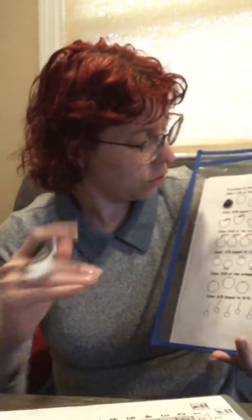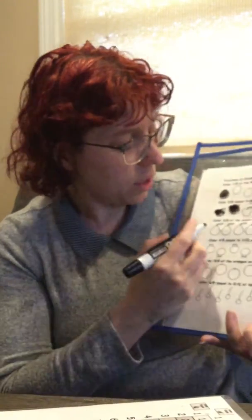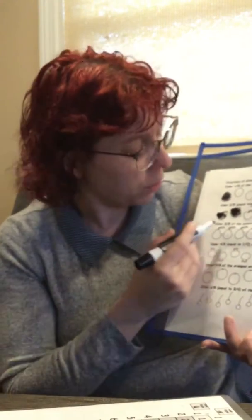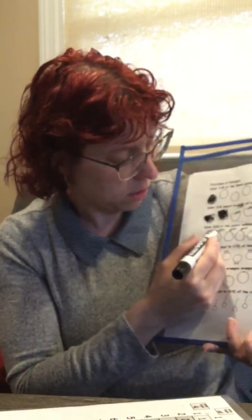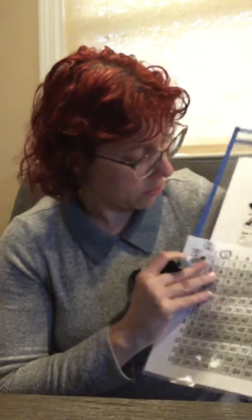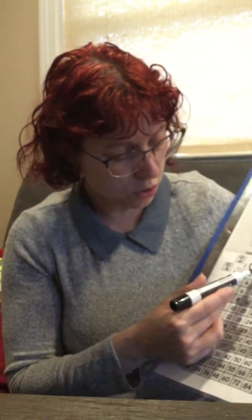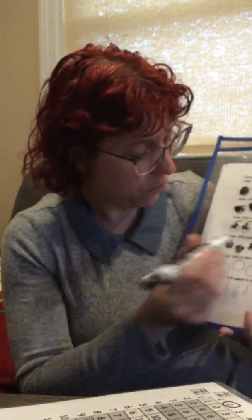For three-eighths, there's a remainder, so you just color the number it asks for — one, two, three. For four-eighths, we divide four into eight, that's two, so one-half. Then two goes into eight four times. So we're going to color one, two, three, four.